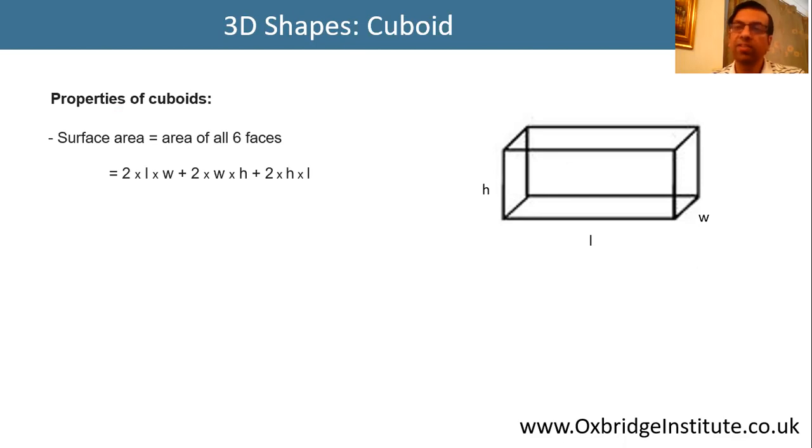Remember, the surface area is if we had to paint the cuboid, how much area would we need to cover? So the surface area is 2 times length into the width. That is the surface area of the bottom and the top of the cuboid.